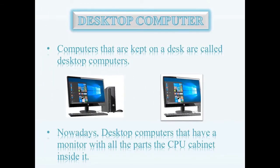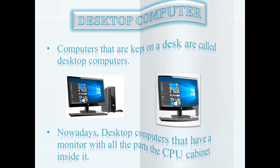Now I will define desktop computer. Computers that are kept on a desk are called desktop computers. There are two types of desktop computers. Some desktop computers come with a separate CPU cabinet and all parts like a monitor, keyboard, and mouse are connected to the CPU cabinet. Another type of desktop computer has a monitor with all parts of the CPU cabinet inside the monitor.